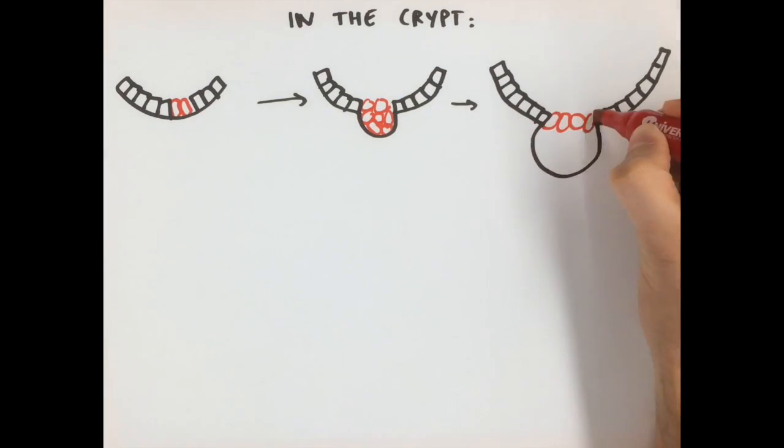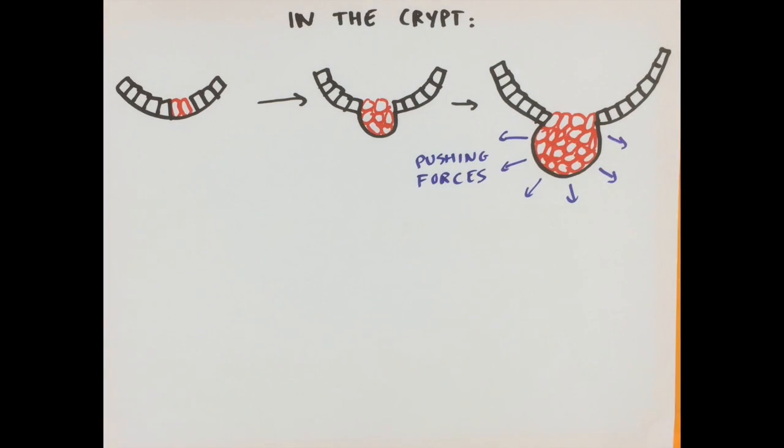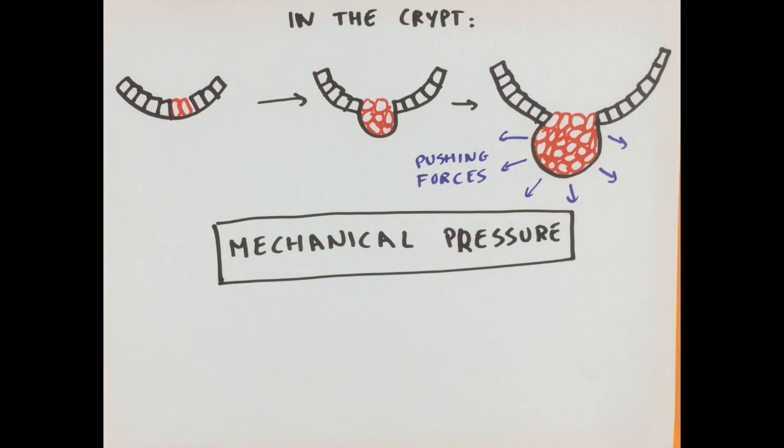As time goes on, the tumor grows more and more and starts to push against the surrounding cells. This is how tumors create mechanical pressure.